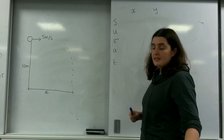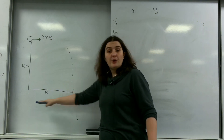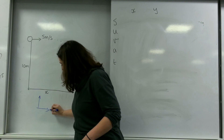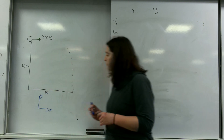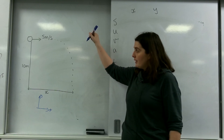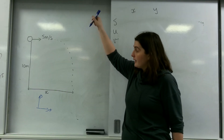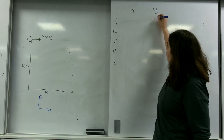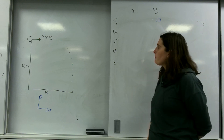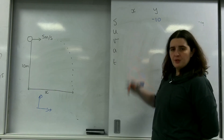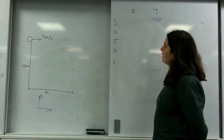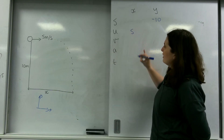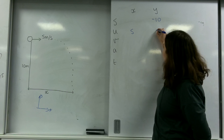My displacement in the X direction I don't know. In the Y direction, I am falling 10 metres down, so my displacement is minus 10. My initial velocity in the X direction — I've got an arrow pointing at it — is 5. But I've got no arrows pointing down to start with, so that's 0.